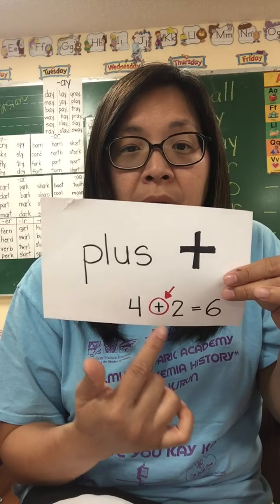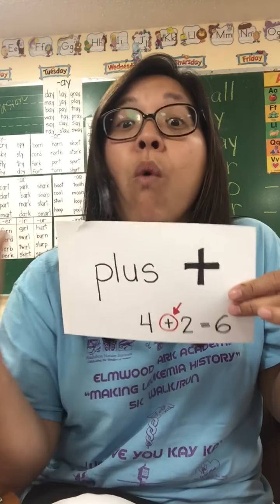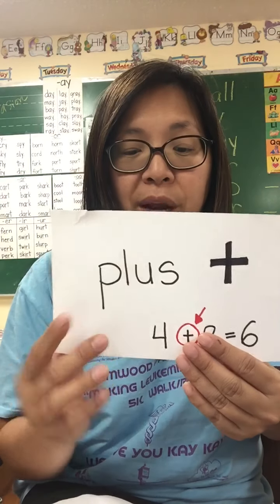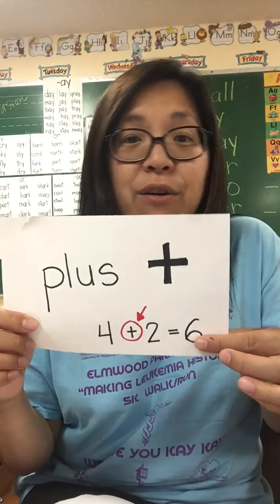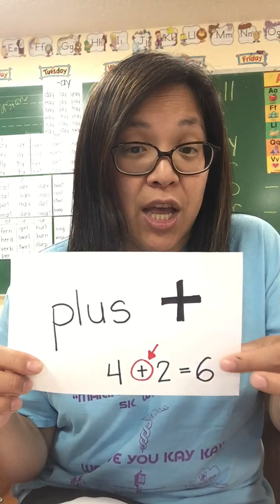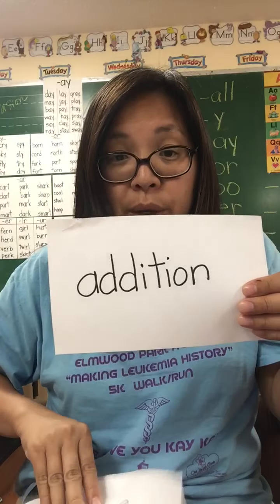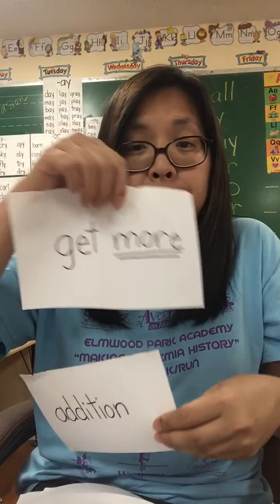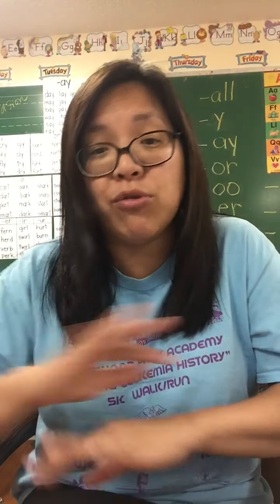For example, four plus two equals six. You have four objects, you add two more, and you get more — you get six objects, which is more than where you started at four. Think about it as candies: you have four candies and grandma or grandpa gives you two more, so you get six candies. Six candies is a lot more than four candies. So addition is what we do to get more.